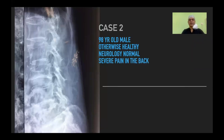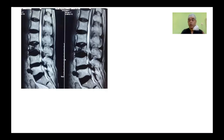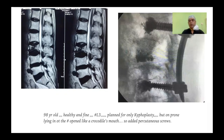Case 2: A 98-year-old male, otherwise healthy, neurologically normal, with back pain. He had a pincer-type fracture — OF4 per the classification. This required stabilization, as a simple pain relief procedure would not suffice given the likelihood of progression to kyphosis. We performed fixation with cement augmentation and proper posterior fixation, along with vertebroplasty to augment the anterior vertebra. He did quite well.